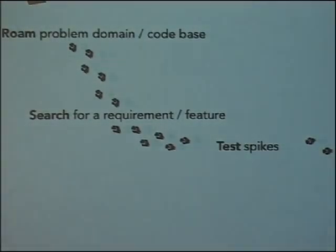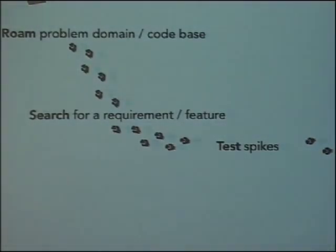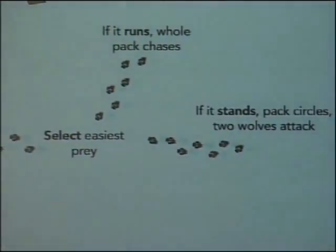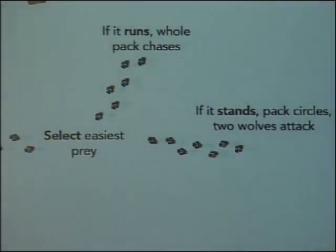We think that testing individual requirements is like spikes. Each of the wolves — perhaps alone, or in ones, twos, or threes — goes off to do a spike and figure out if this is a good solution. Each prey animal within the herd represents a possible implementation to the problem you've decided to target. You want to find which is the easiest, which will get you there with the least amount of effort. Then the wolves come back together and decide which approach seems easiest.